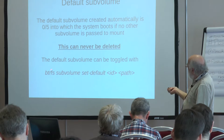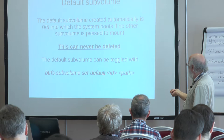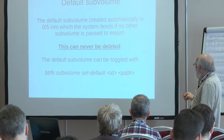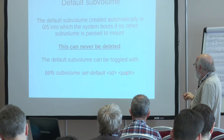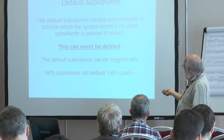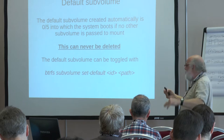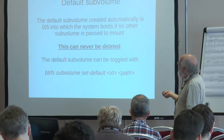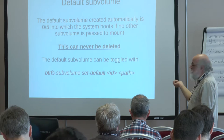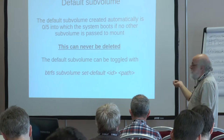You can toggle a default subvolume with the command 'btrfs subvolume set-default', giving it the ID of the subvolume and the path to it. The benefit is that you can move the view of the file system — if you set the default to a subvolume lower in the tree you can't see subvolumes above it, but you can see all those created below it. This is useful particularly when taking snapshots.